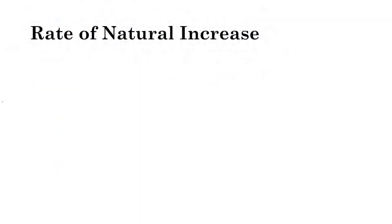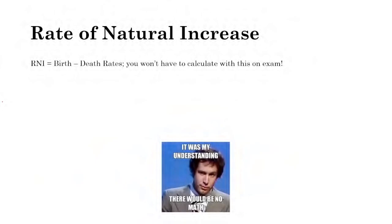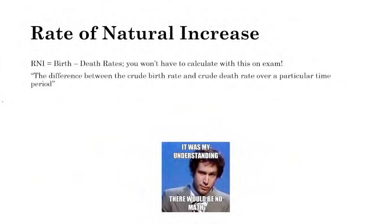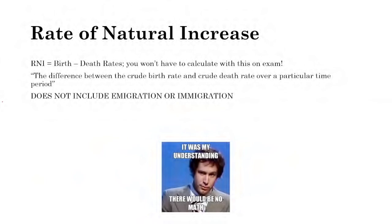The rate of natural increase is birth rates minus death rates — not an environmental term, it relates to humans. It's the difference between the crude birth rate and the crude death rate over a particular time period. It does not include emigration or immigration.